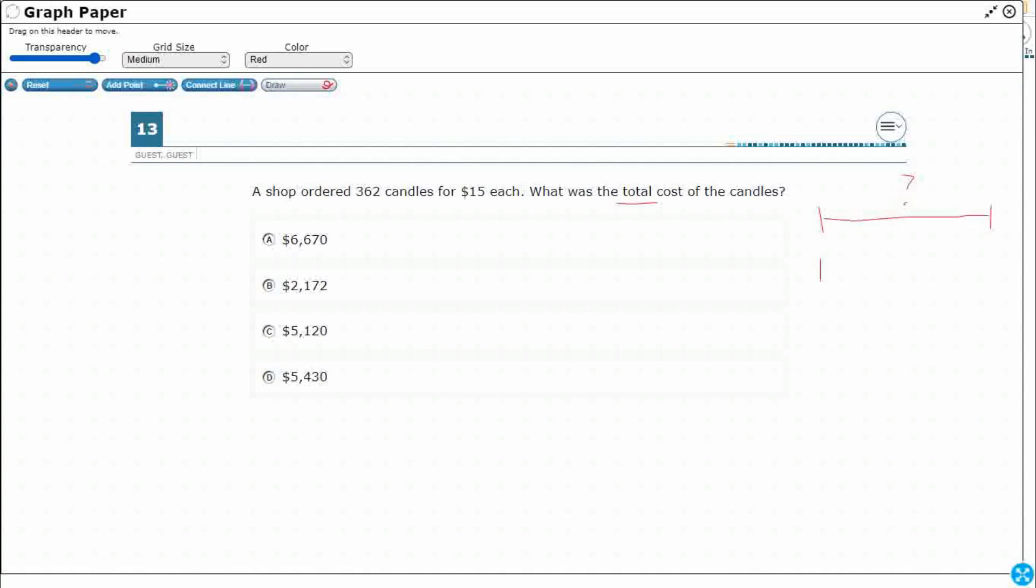And I've got sets of 15, right? Each candle is 15 bucks. How many sets do I have? I have 362. So if I were to draw 362 little spaces, I don't have room for that. So 362, every single one of those is 15 bucks. That's what we're looking at there.